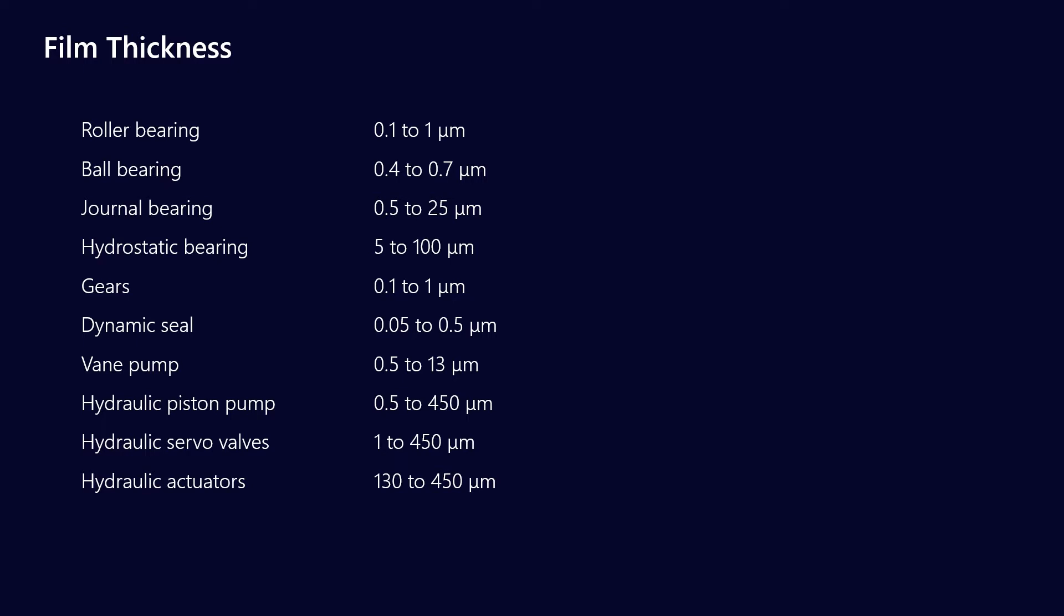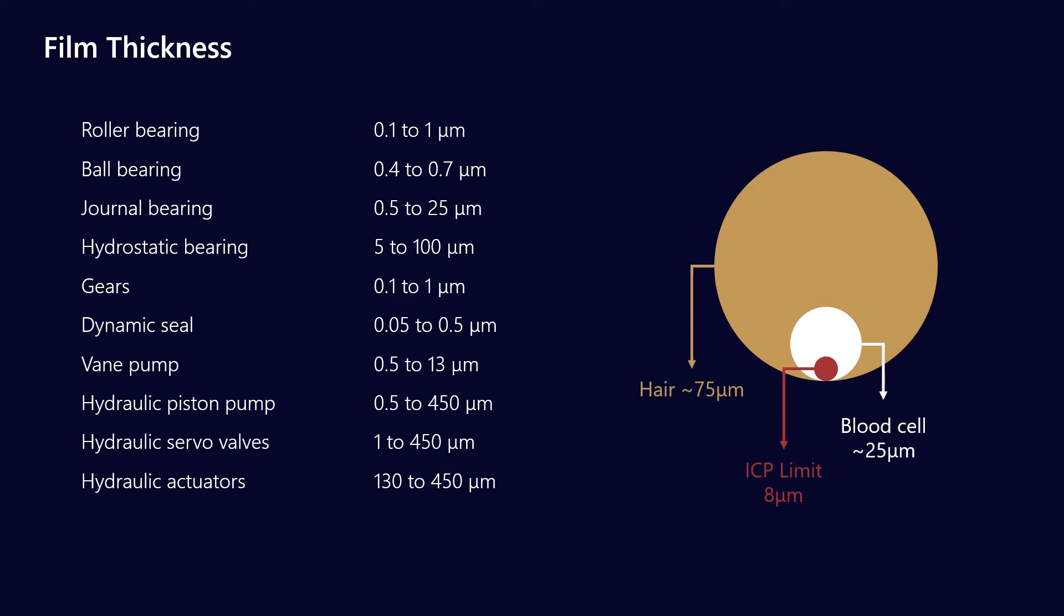To put that in perspective, how big is 0.1 to 5 microns? Well, a human hair is about 75 microns thick, obviously depends on how thick your hair is. A white blood cell is about 25 microns, roughly. And the ICP detection limit is 8 microns.